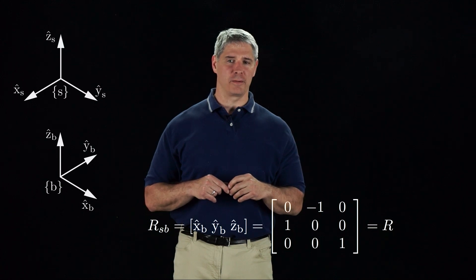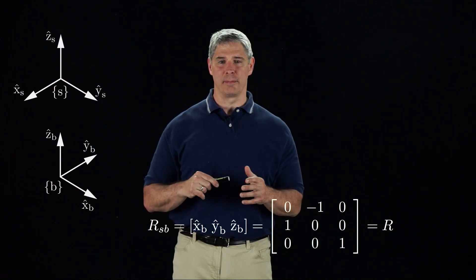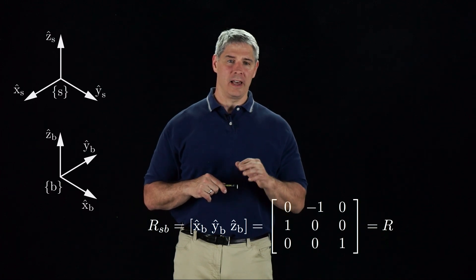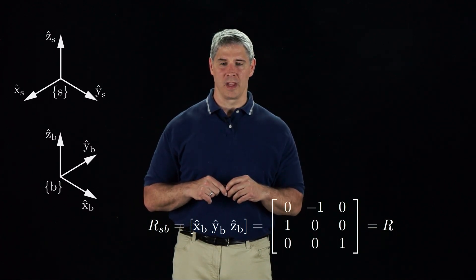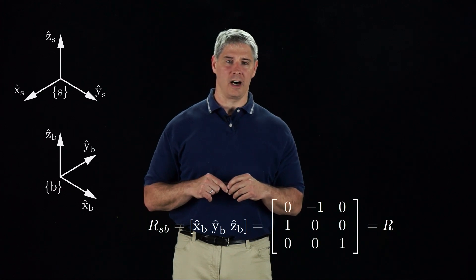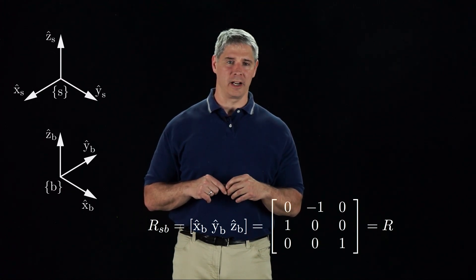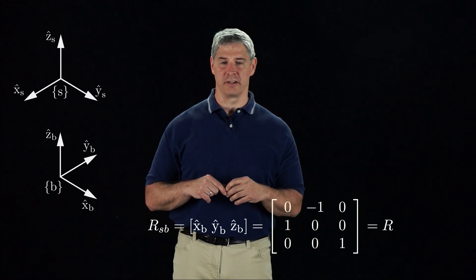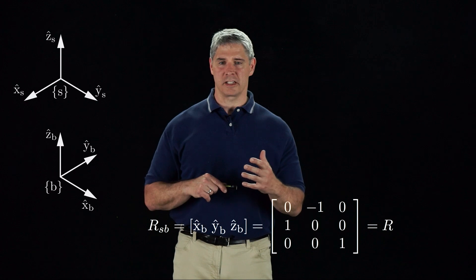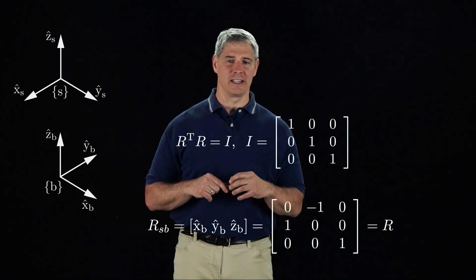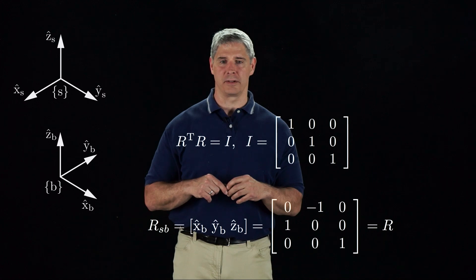As we learned in Chapter 2, the space of orientations of a rigid body is only three-dimensional, but we have nine numbers in a rotation matrix. That means the nine entries of the matrix must be subject to six constraints. Three of those constraints are that the column vectors are all unit vectors, and the other three are that the dot product of any two of the column vectors is zero — in other words, the three vectors are orthogonal to each other. These six constraints can be written compactly as R transpose times R equals the 3×3 identity matrix I.